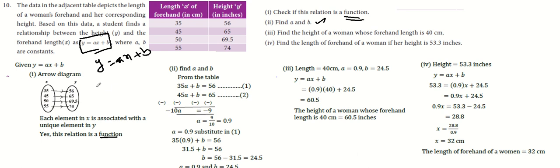For example, in the first relation, y is 56 and x is 35. If you want to find a value, x is 35, so 35a plus b.